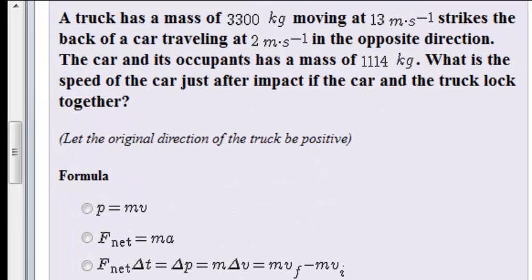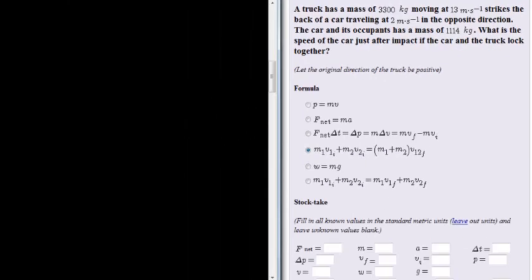The truck has a mass of 3,300 kilograms moving at 13 meters per second. It strikes the back of a car traveling at 2 meters per second in the opposite direction. The car and its occupants has a mass of 1,114 kilograms. What is the speed of the car just after the impact if the car and the truck lock together?